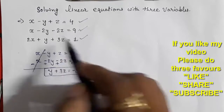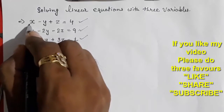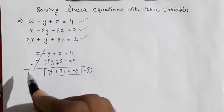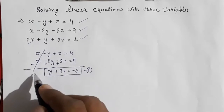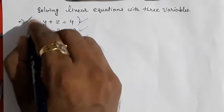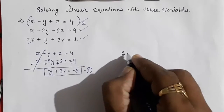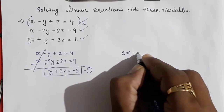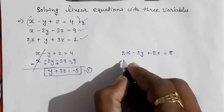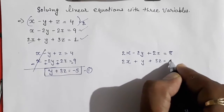Taking the first and third equation, here it is 2x and here it is x only, so I am going to multiply the first equation by 2 to eliminate x. We are eliminating x only, same as before. Multiplying gives 2x minus 2y plus 2z equals 8, and the third equation is already 2x plus y plus 3z equals 1.